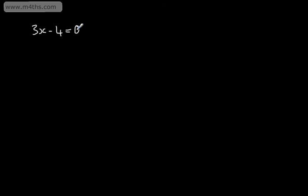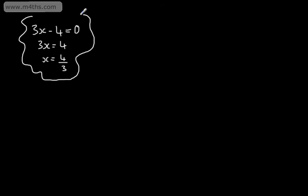Inequalities differ from equations. When we solve an equation, we have a specific value or specific values that satisfy that equation. For example, if we had the equation 3x minus 4 equals 0, we would add 4 to both sides to get 3x equals 4, then divide both sides by 3 to get x equals 4 thirds. If we had a quadratic equation, we could have two specific values.